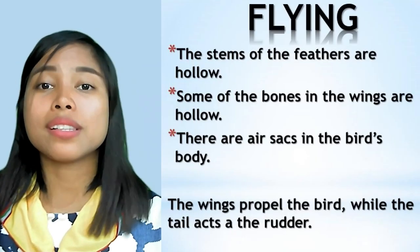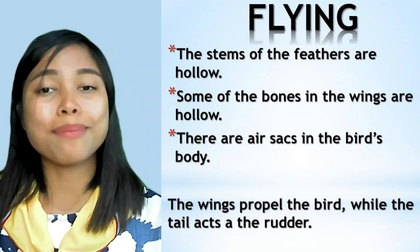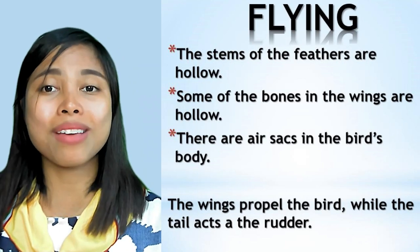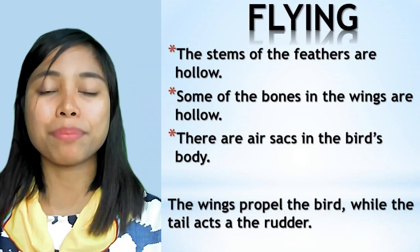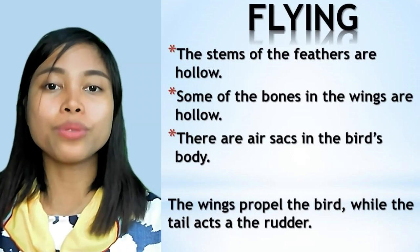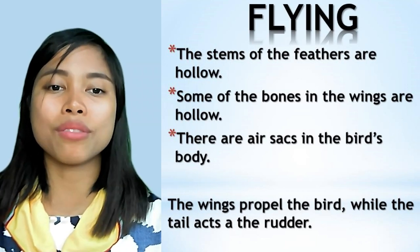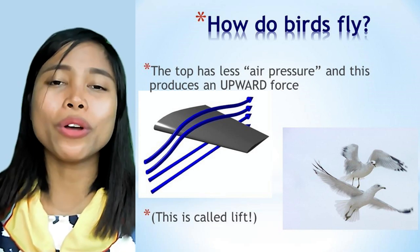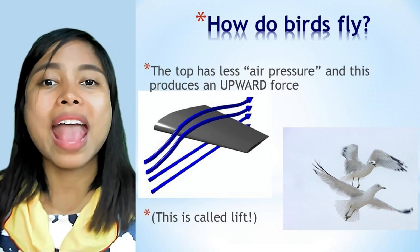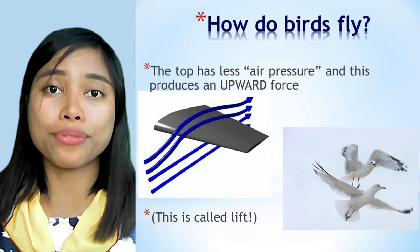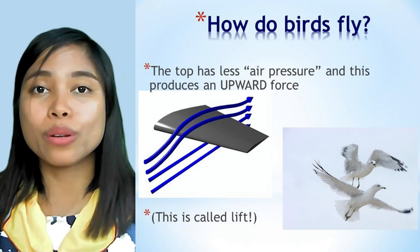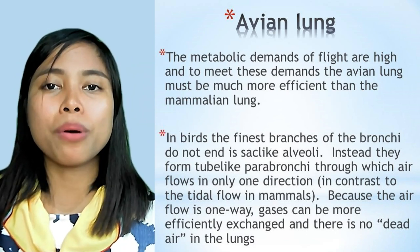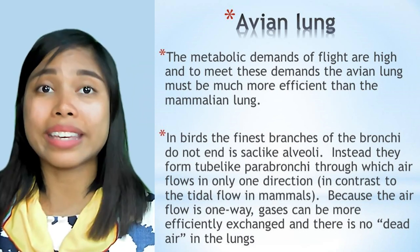Regarding flight, the stem of the feathers are hollow, and some of the bones in the wings are hollow so that the air sacs in the bird's body allow them to flap their wings. The wings propel the bird while the tail acts as a rudder. In terms of how birds fly, the top of the wing has less air pressure, which produces an upward force called lift.